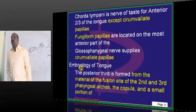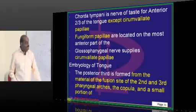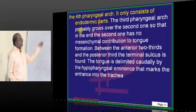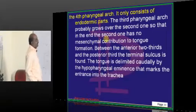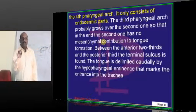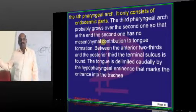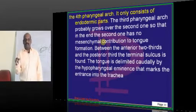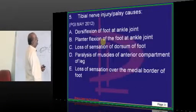Looking at the embryology of the tongue: the posterior one-third of the tongue is derived from the second and third pharyngeal arches, and a small part from the fourth pharyngeal arch as well. For example, the second branchial arch is supplied by which nerve? The seventh — facial nerve. S for seventh, S for second — there are lots of things related to S, which you need to ultimately remember.